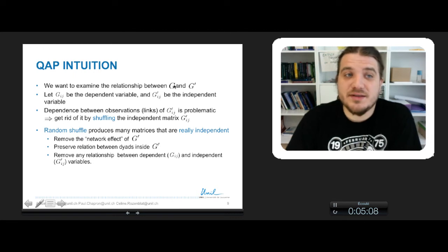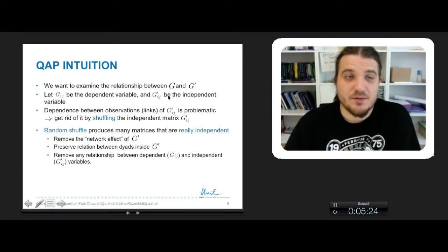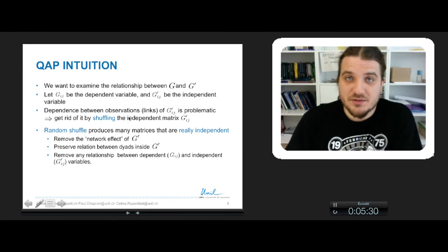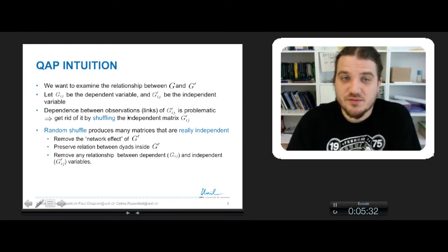Recall that we want to examine the relationship between G and G'. We'll say that G_ij, the adjacency matrix of G, is a dependent variable, and we'll try to see if the adjacency G'_ij of network G' can be correlated with G. Dependence between observations, between the links of any network, is problematic.